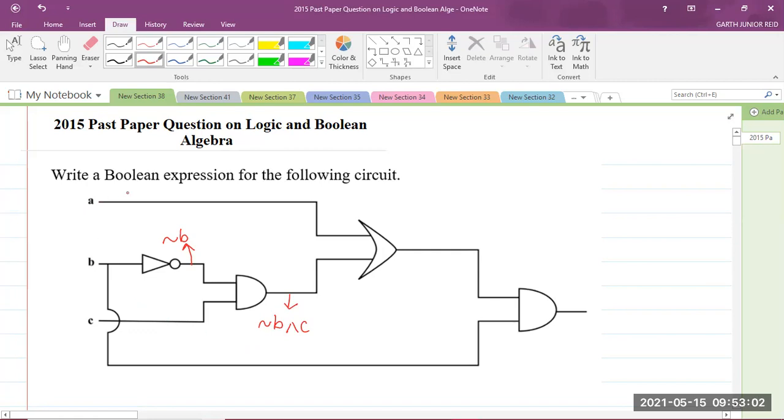I hope you can see that. Now let's look at A. A goes through this gate here. And also NOT B and C goes through this gate. This is what we call the OR gate.